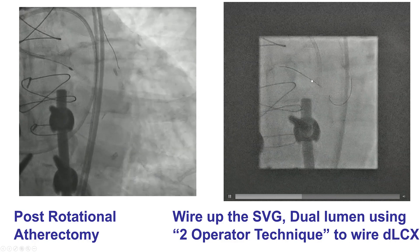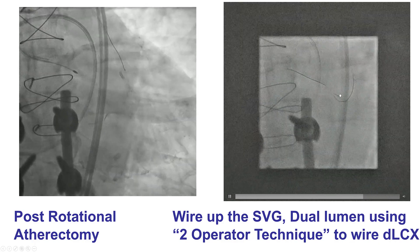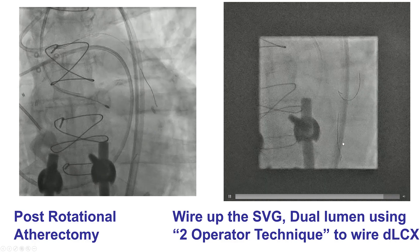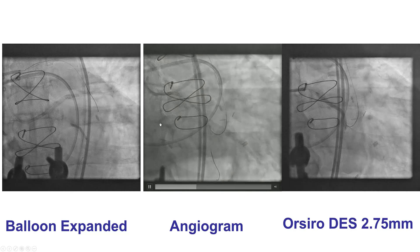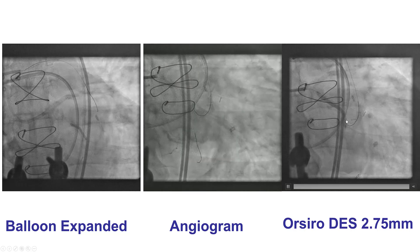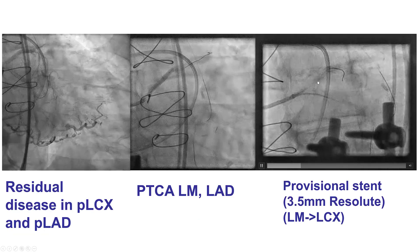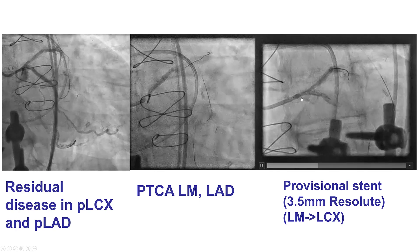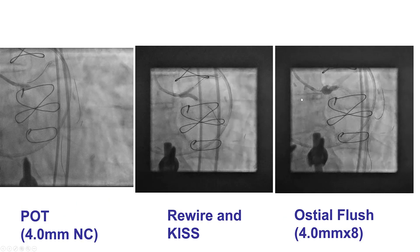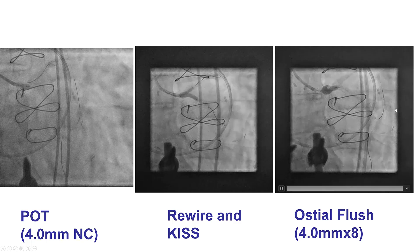We had a dual-lumen microcatheter, and by using the dual-lumen, we were able to advance a guidewire into the distal circumflex, which then facilitated antegrade stenting. The balloon now expanded nicely, and we were able to stent all the way to the left main ostium using drug-eluting stents. There was some patent segment of the LAD, but we decided to use the provisional technique, stenting from the circumflex all the way into the left main, providing a nice result. We rewired after doing the proximal optimization technique, and then did an ostial flush with a 4.0 balloon to further dilate the ostium of the left main.